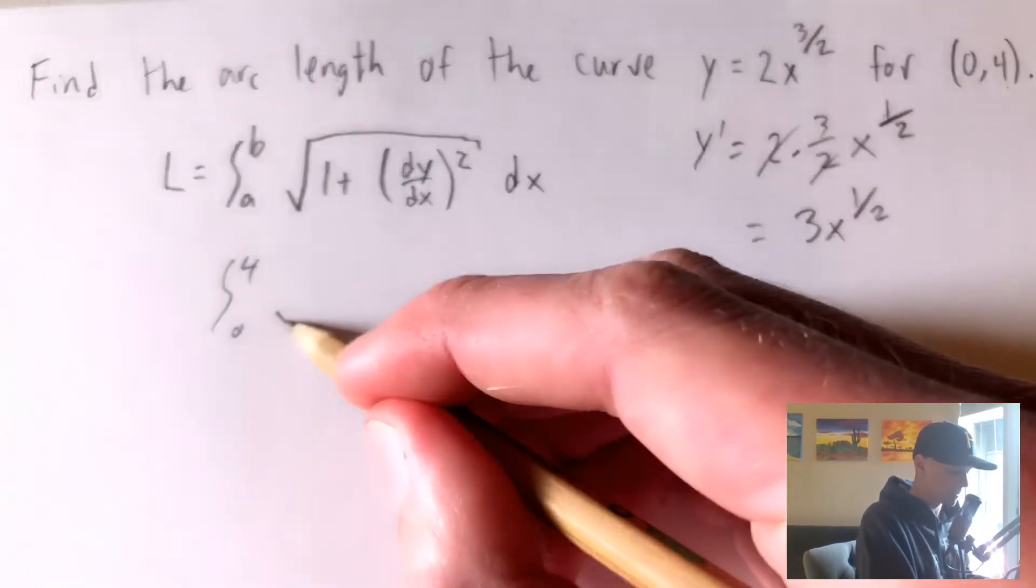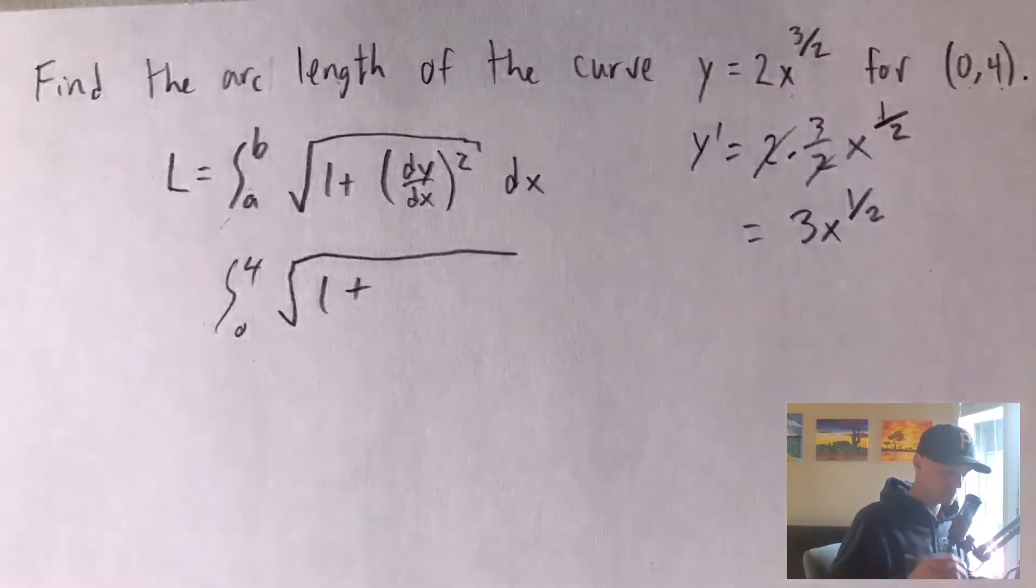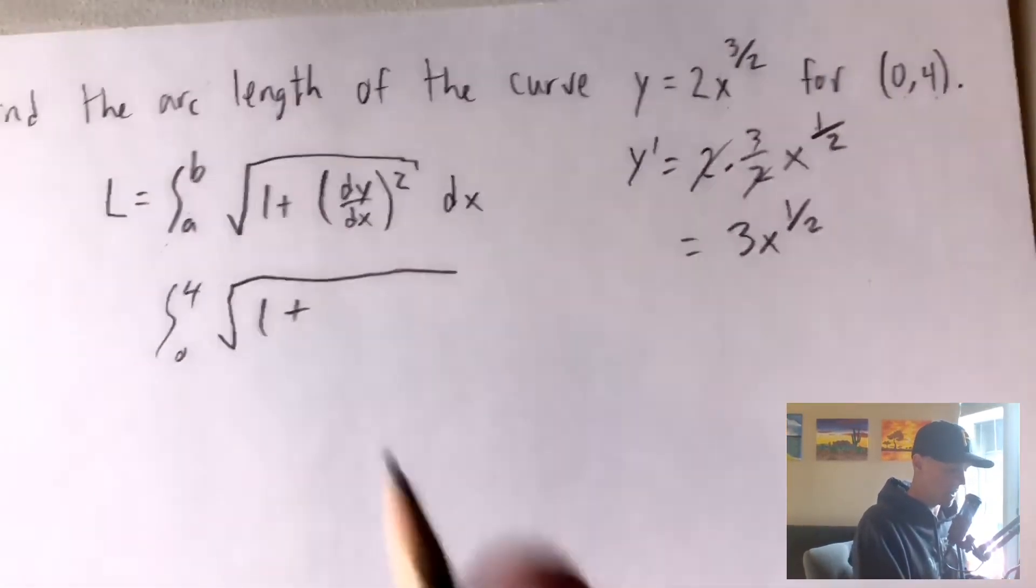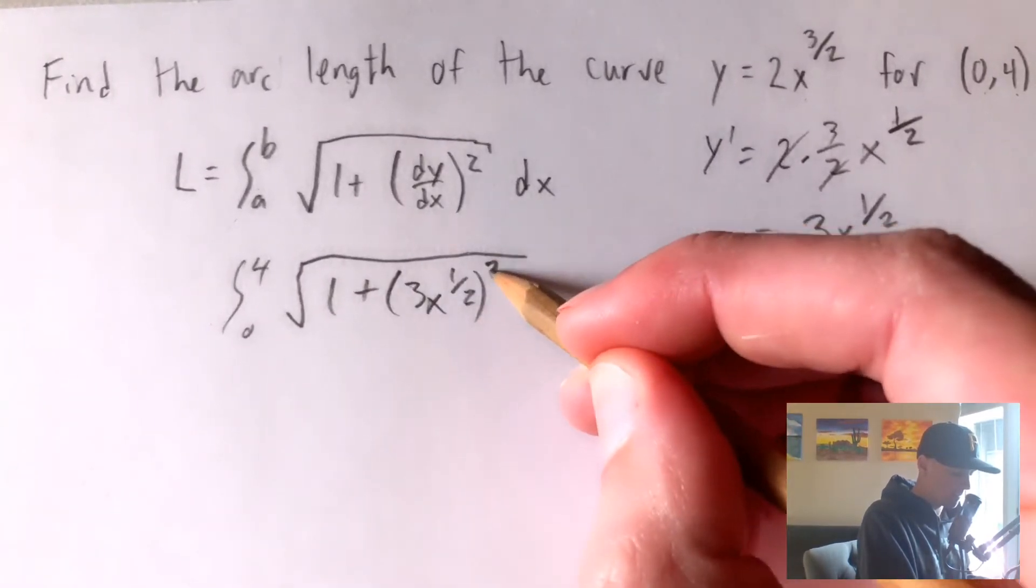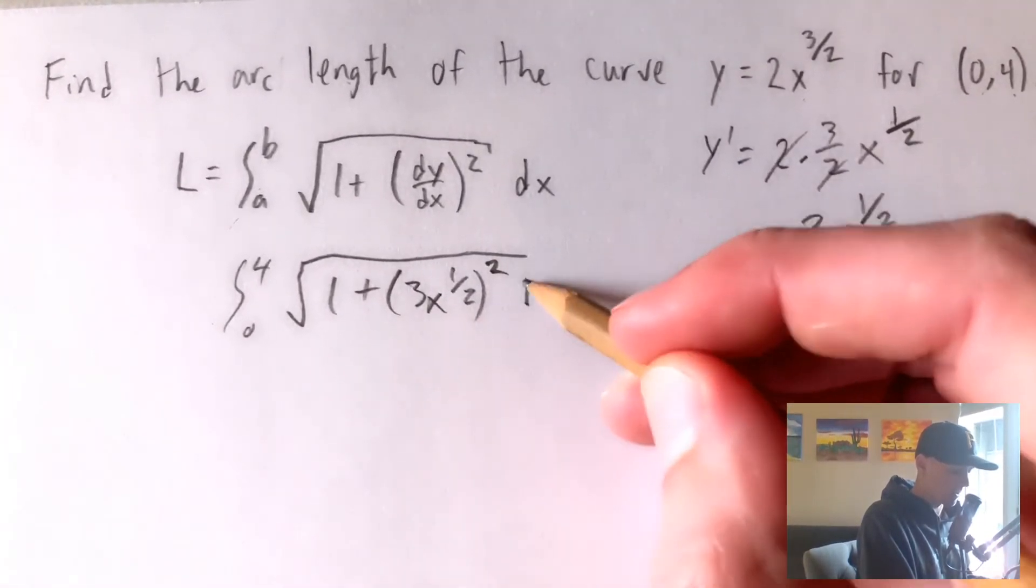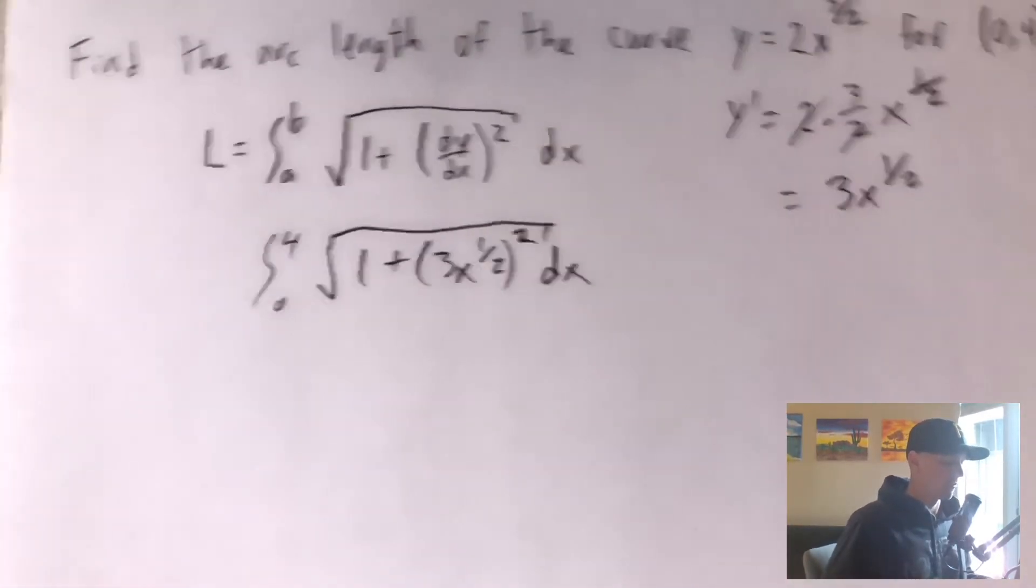So we're going to get this being plugged in for dy dx. So that's going to give us the square root of 1 plus 3x to the 1 half, all squared. And then we're going to integrate this with respect to x.